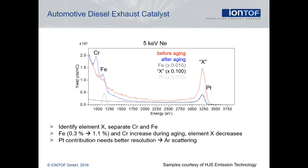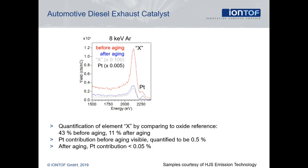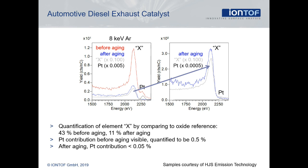Also, the peak of element X extends to higher energies, indicating the presence of other elements such as platinum, which cannot be resolved under these conditions. By switching to 8kV argon scattering, the heaviest elements can now be resolved. It turns out that besides element X, platinum is also present on the surface. During the aging process, the coverage of element X — or more precisely its oxide — decreases from 43% to 11%. At the same time, the platinum coverage decreases from 0.5% to below the detection limit.